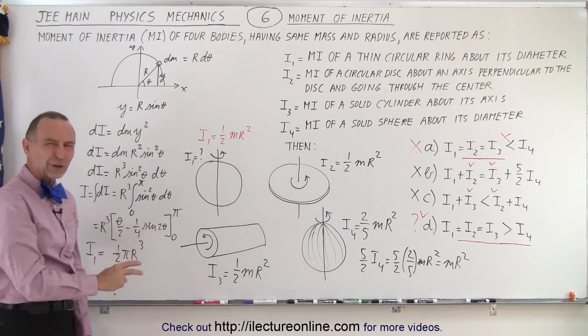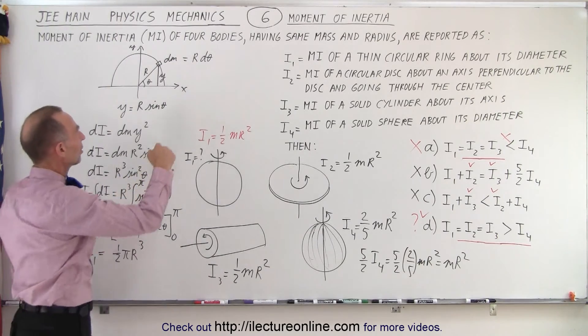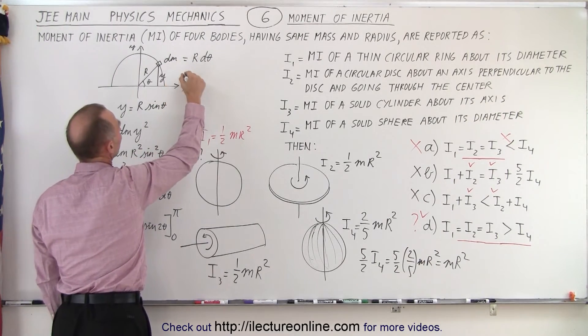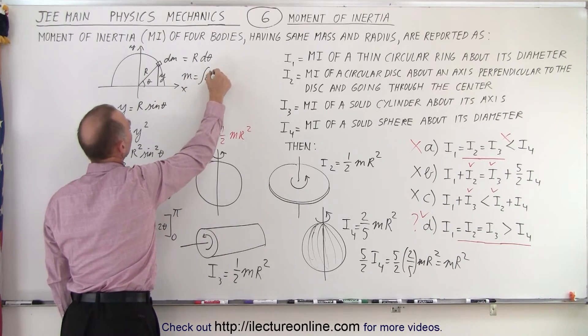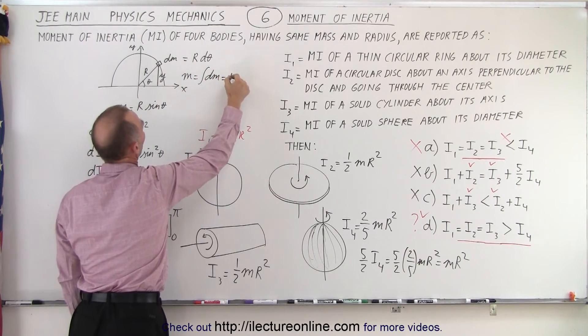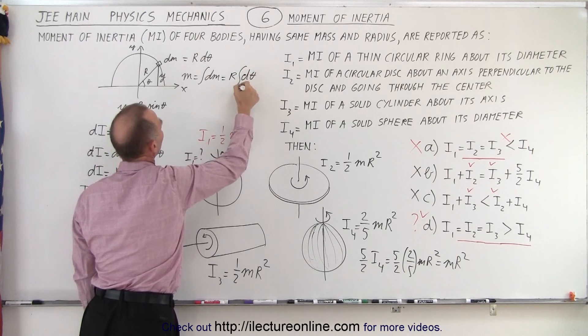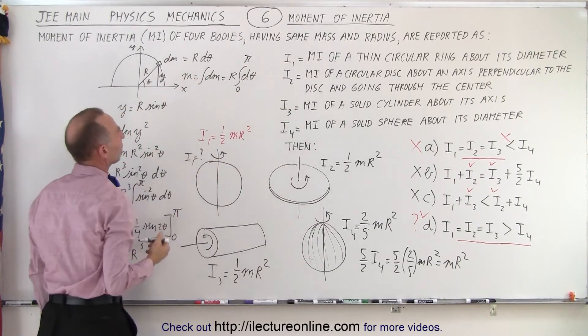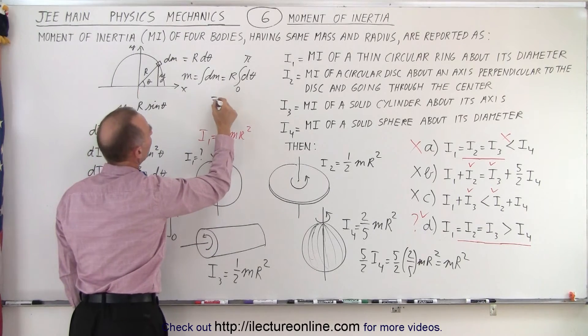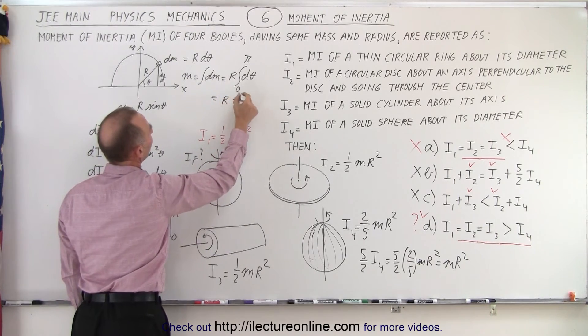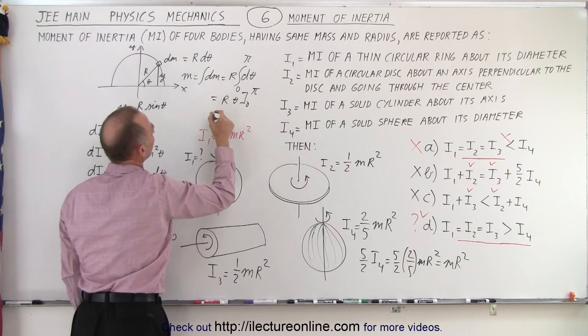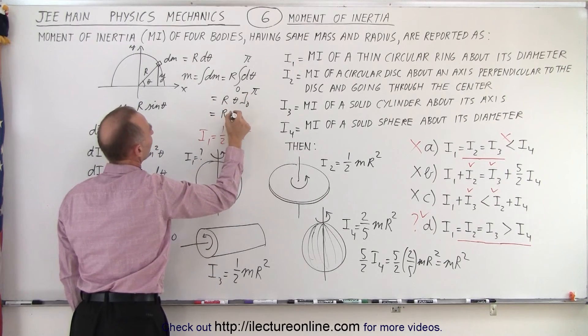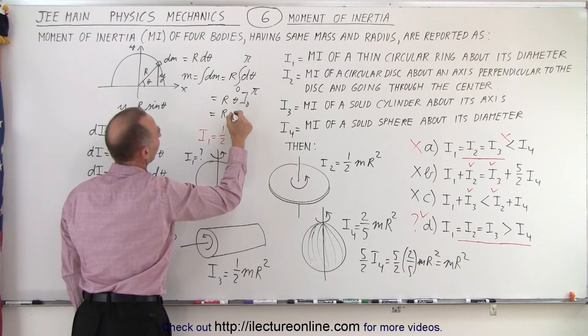But 1 half pi r cubed, how does that work? Well, actually, how do you find m? Well, you know that m is equal to the integral of dm, which is equal to r times the integral of d theta, and we're going to integrate from zero to pi. Half loop. So this would be equal to r times theta from zero to pi, which is equal to r times pi.